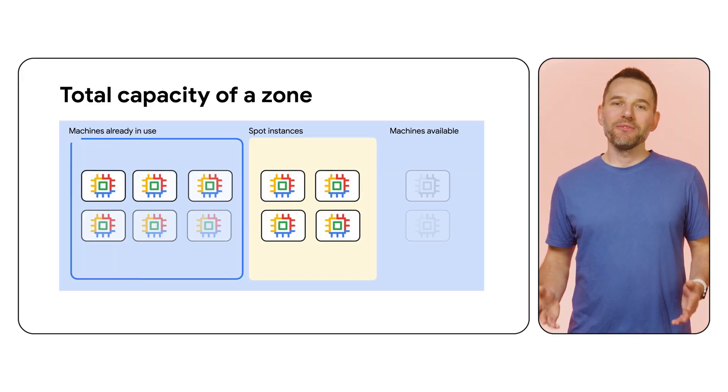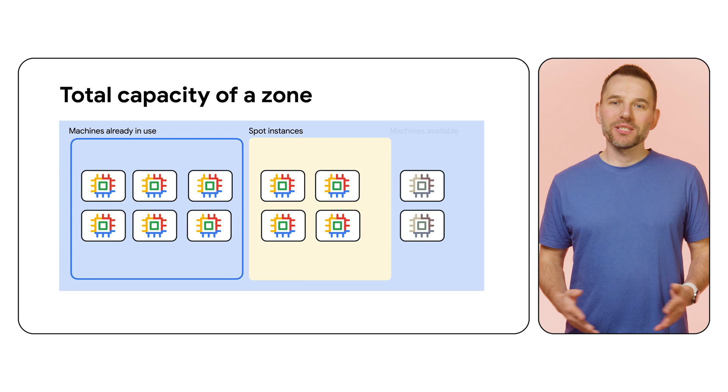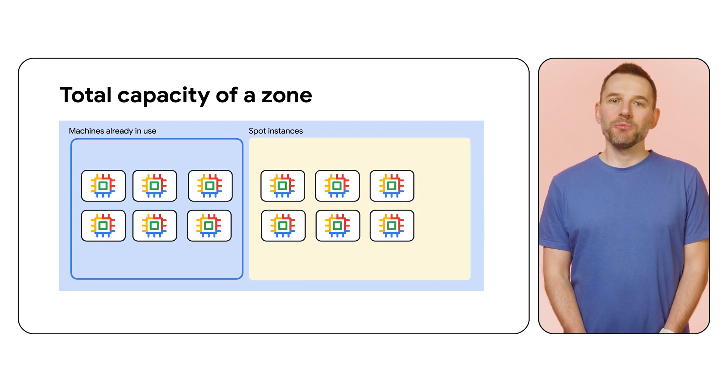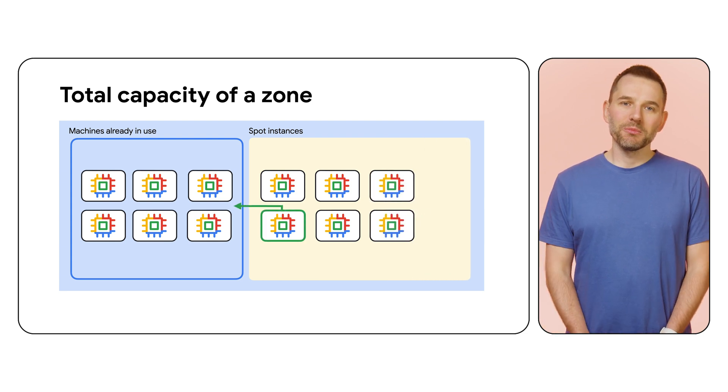However, if there are no more available resources, every request for a standard VM will cause a spot VM to be preempted, so the resources can be used for a standard machine. To remedy losing VMs to preemption like this, you can combine managed instance groups with spot instances to automatically recreate any VMs lost once resources are available again. It's a perfect solution for stateless services that don't have strict SLO requirements, or batch processing systems that will simply retry to schedule a job in case one of the workers disappears.